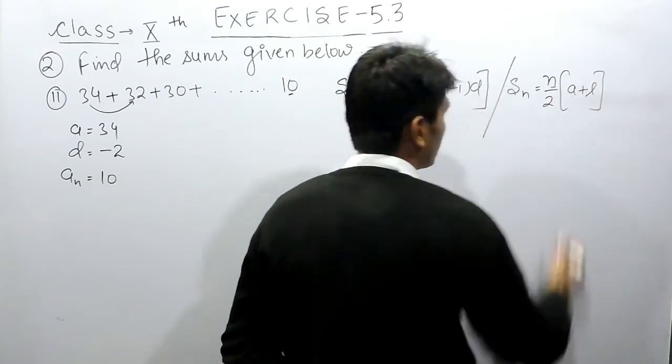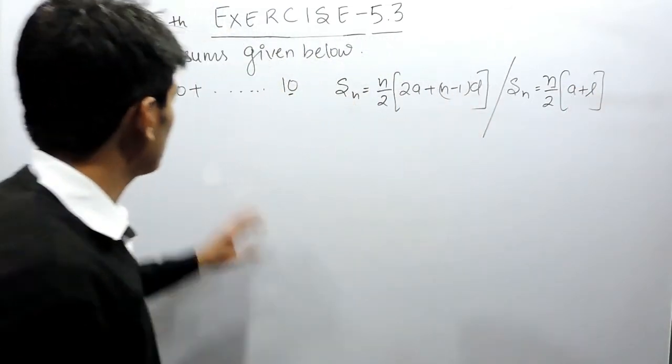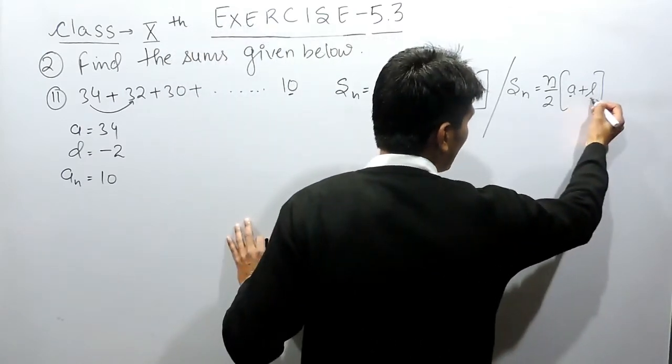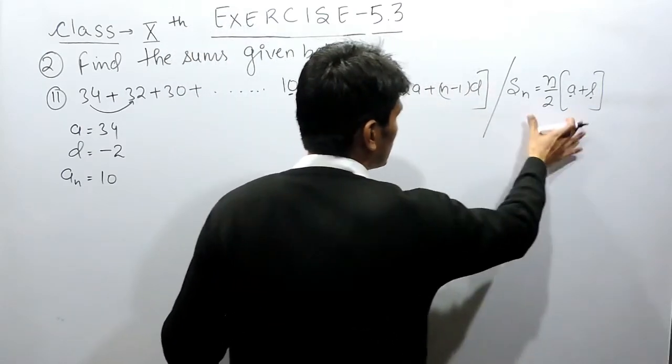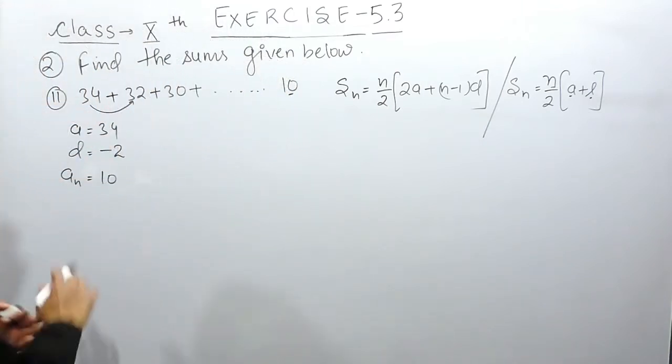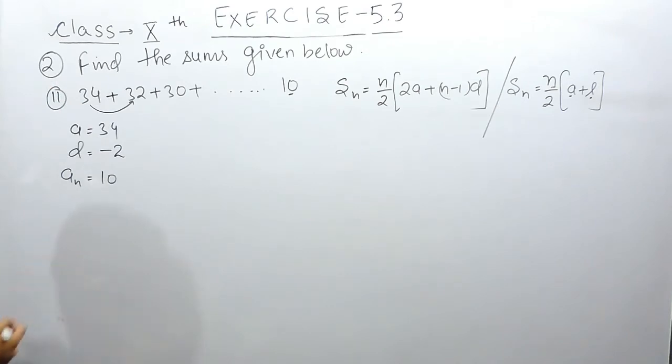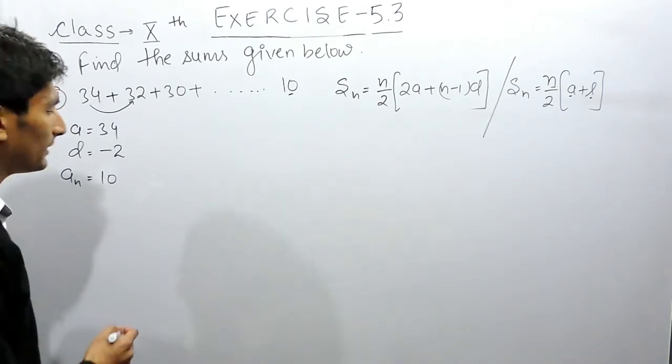Here, n is the number of terms in the AP, a is the first term, and l is the last term. You can use either formula to find the sum, but first you need to find the number of terms in this AP.